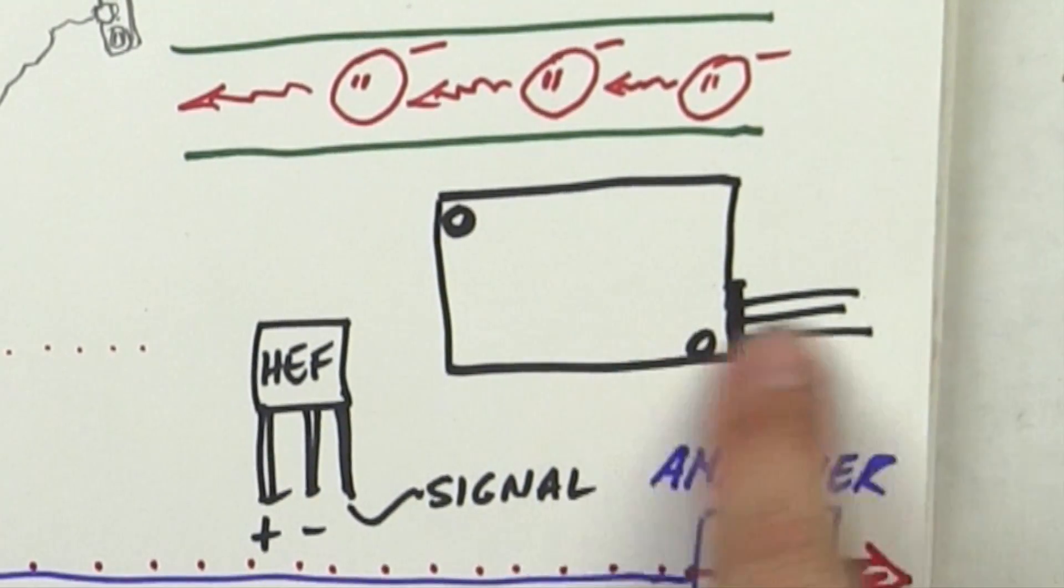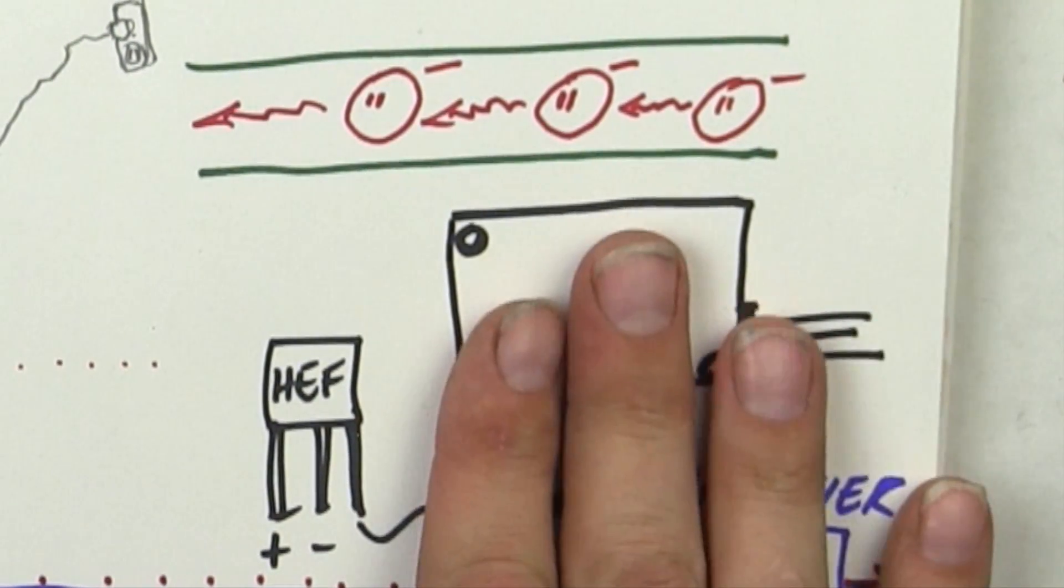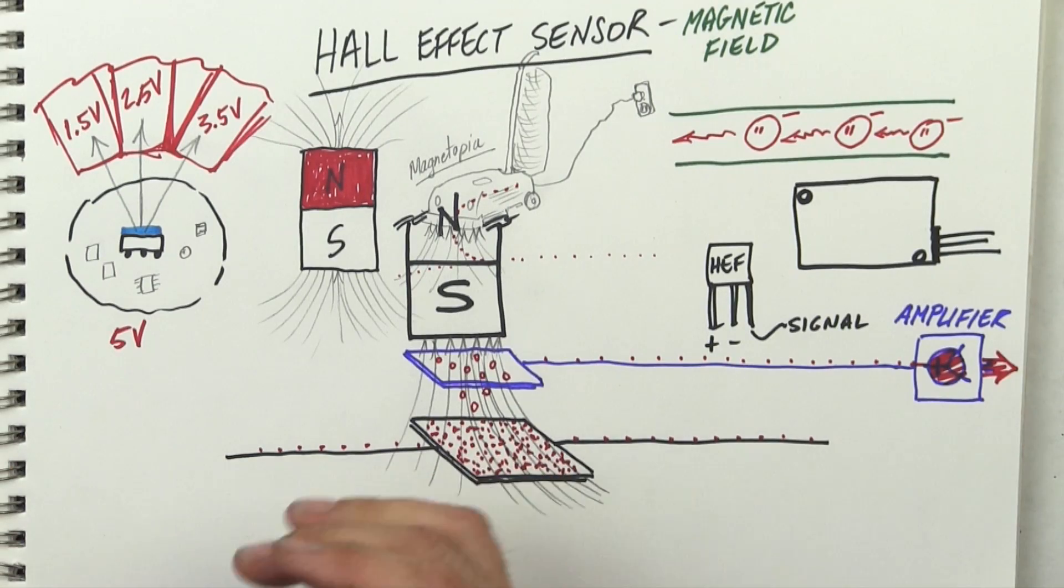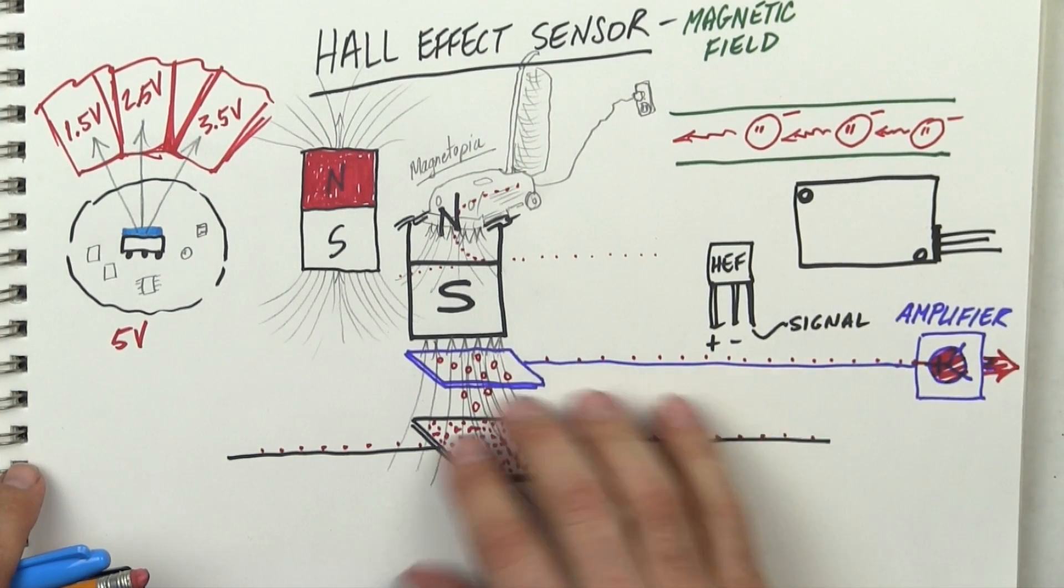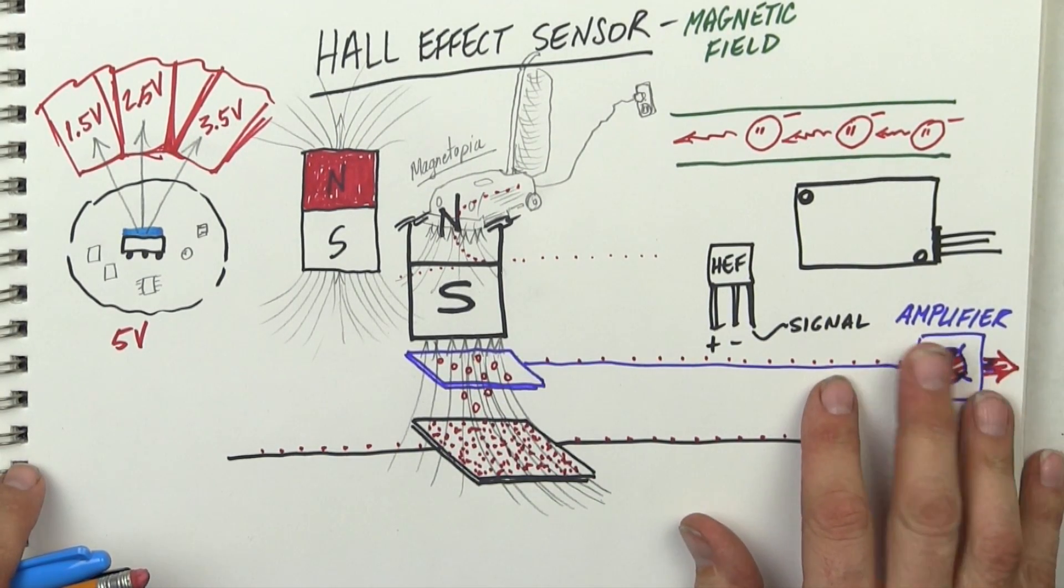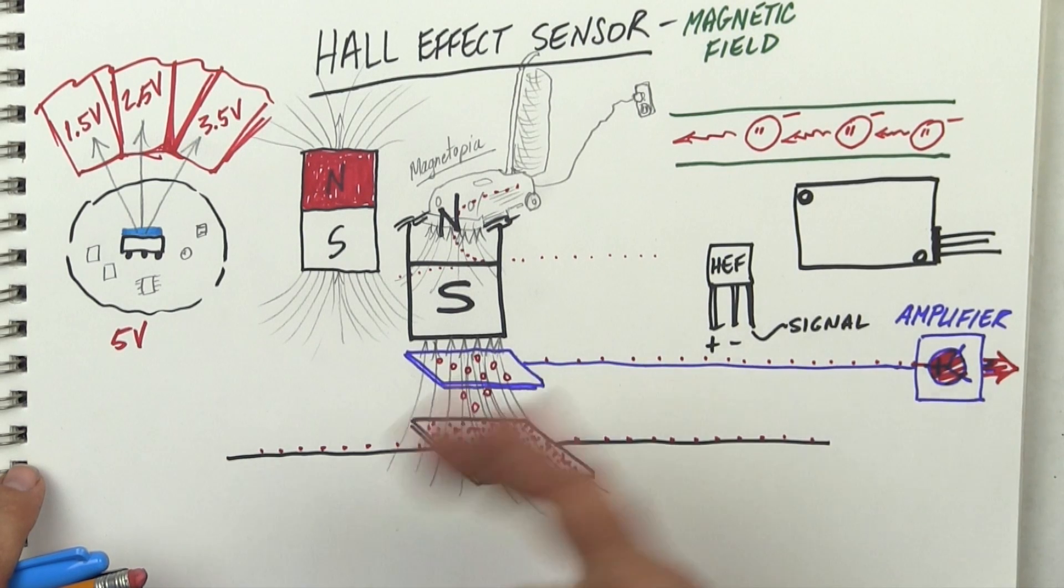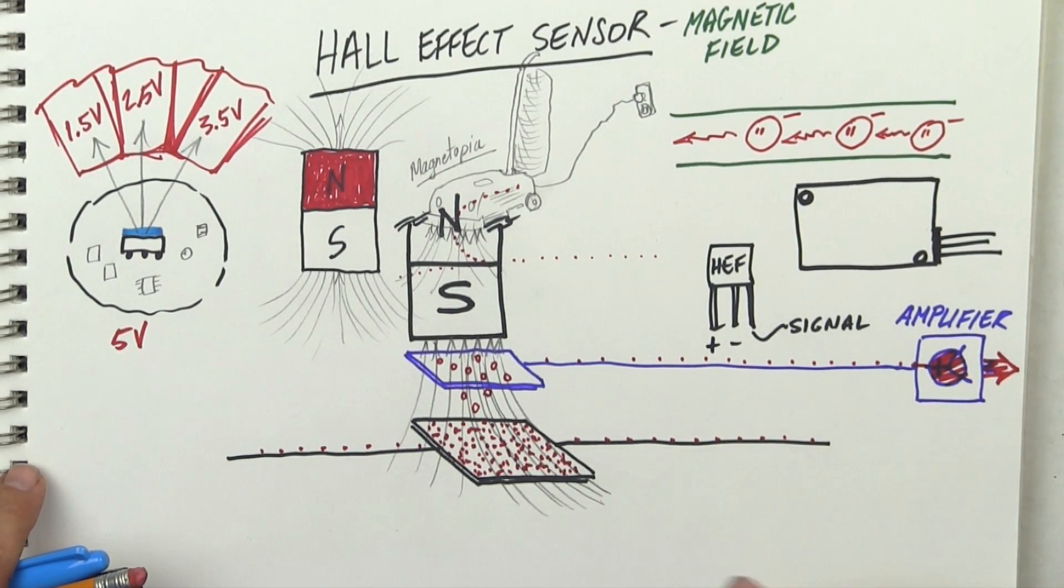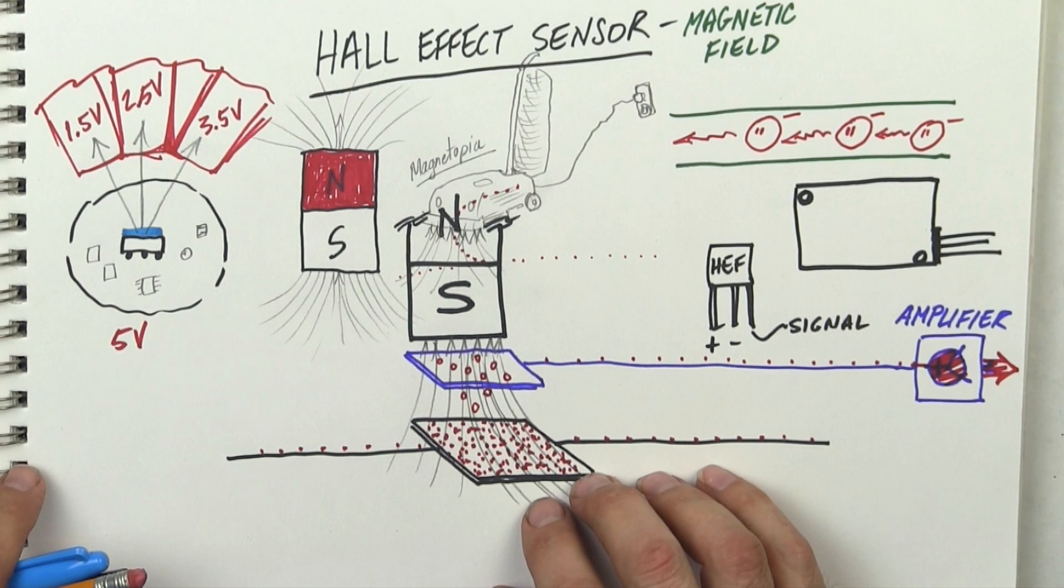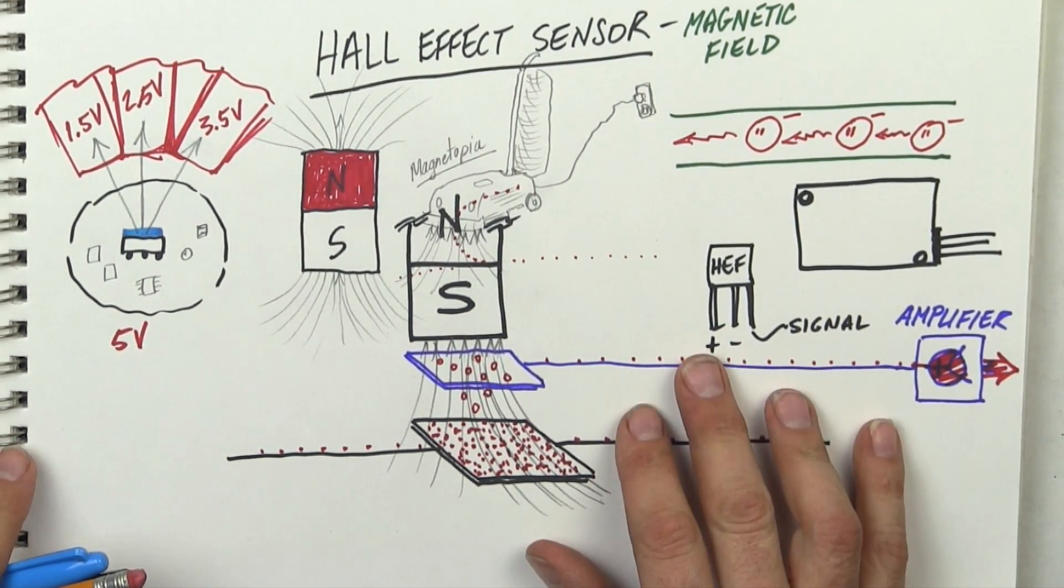The three wires to me is a dead giveaway that it's a Hall effect. If there's two wires it's going to be a switch which is referred to as a reed switch. Hall effect sensor is much more stable and much more sensitive than a reed switch is. The guy that figured out, his name was Hall obviously, and it was way back when, long time ago, 1800s or late 1800s early 1900s.